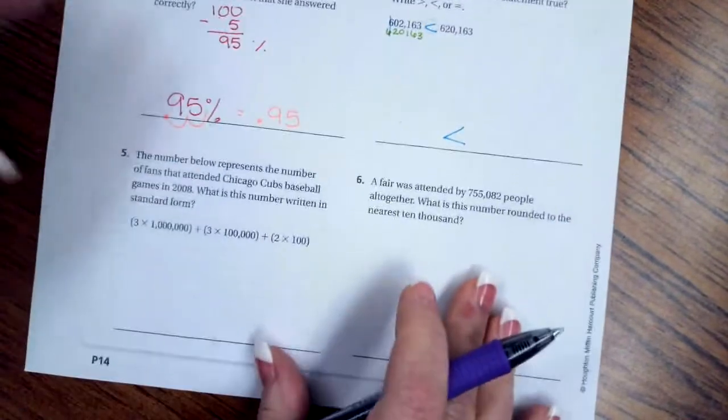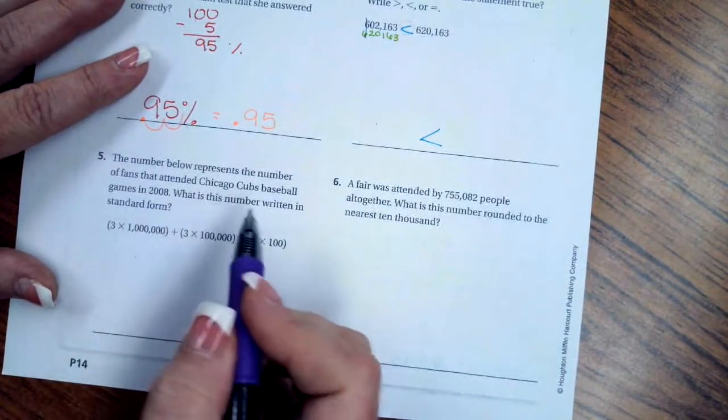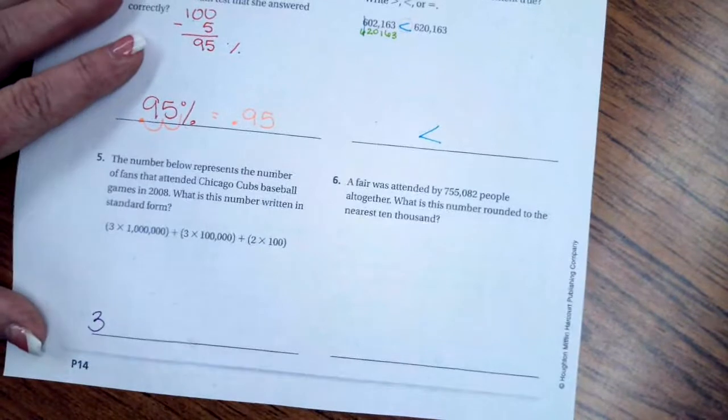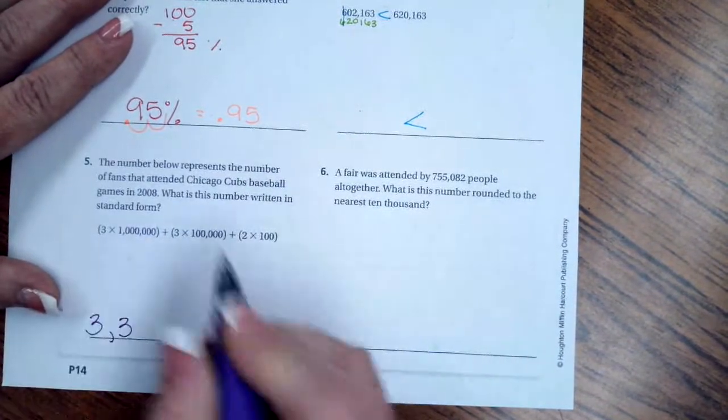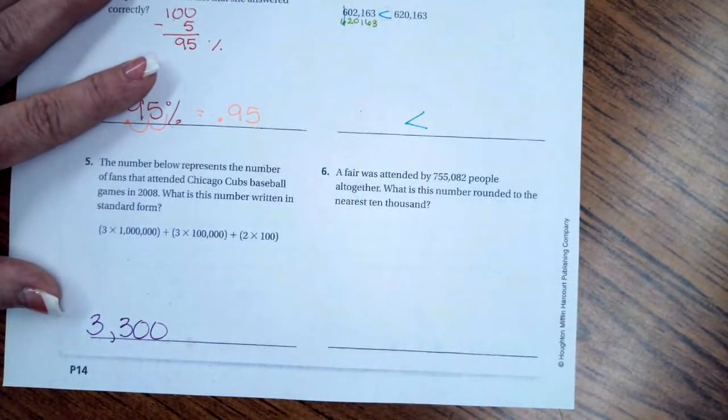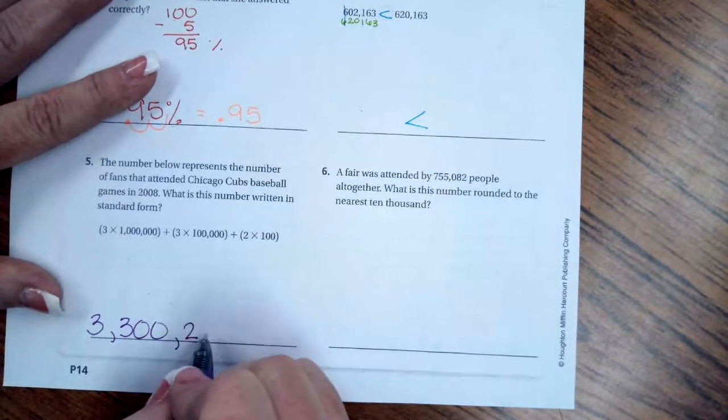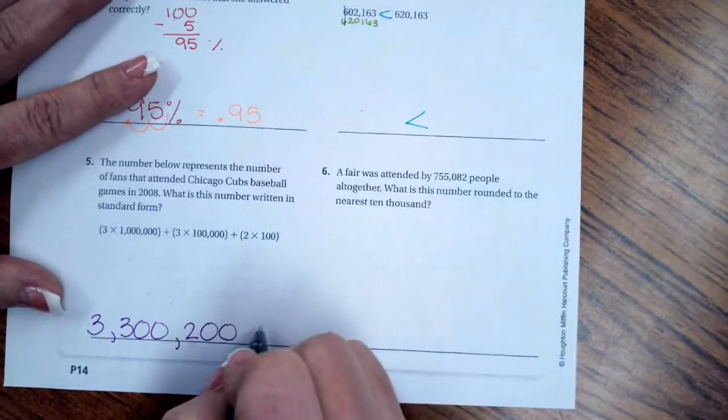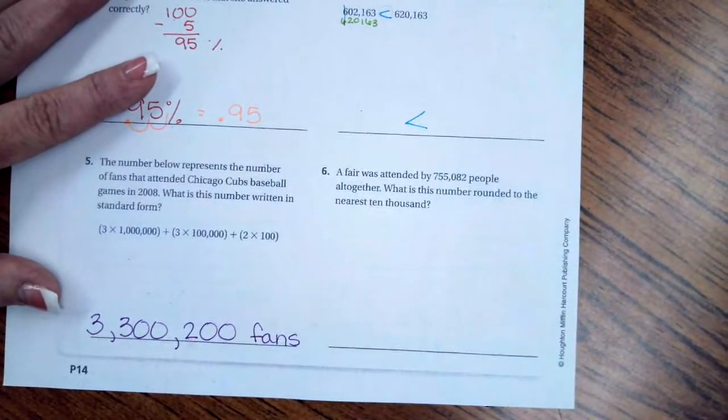Number five says the number below represents the number of fans that attended a Chicago Cubs baseball game in 2008. What is the number written in standard form? So in our millions place we have a three. We have another three in the hundred thousands place, but in the ten thousands and the one thousands we don't have anything, so we're going to fill those in with zeros. Then come our hundreds - I have a two in my hundred spot but I don't have anything in my tens or my ones. Those are zeros again. So we're going to label that with fans: three million three hundred thousand and two hundred fans.